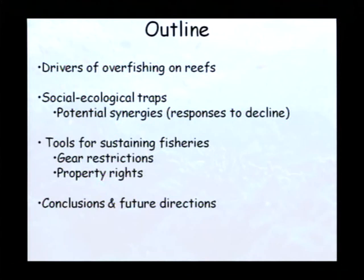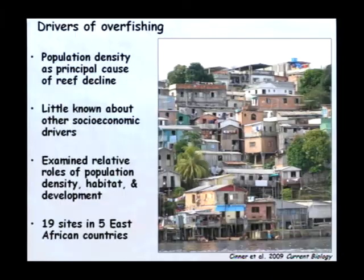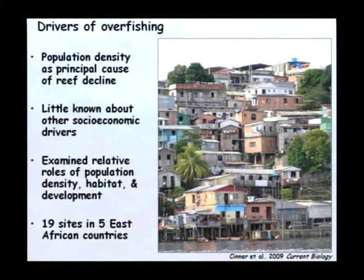Millions of people depend on the beauty and bounty of coral reefs for income and subsistence livelihoods, but around the world the ecosystem goods and services provided by reefs are being degraded from overfishing. It's generally held that human use, driven primarily by population density, is the principal cause of coral reef degradation, but little is known about how other socioeconomic factors, such as development, shape society's impacts on coral reefs. In a recent paper, we tried to shed some light on this by examining the relative roles of human population density, habitat quality, and socioeconomic development in structuring reef fish biomass, which is a variable that's highly sensitive to management and human use.